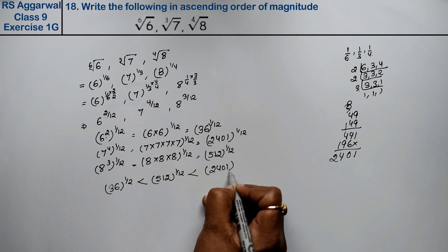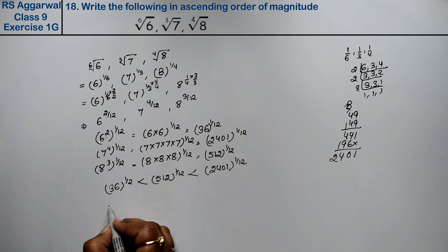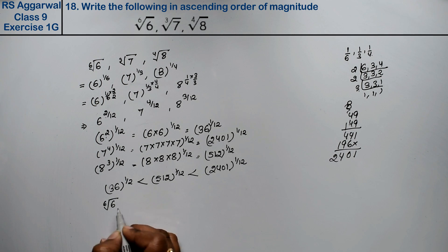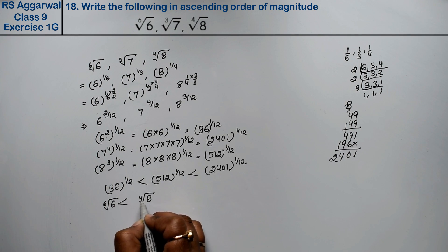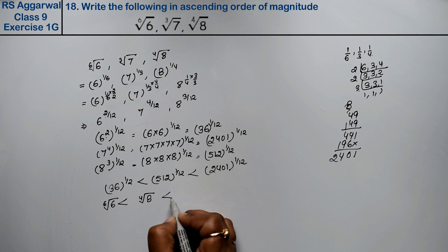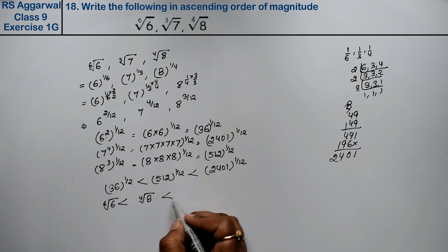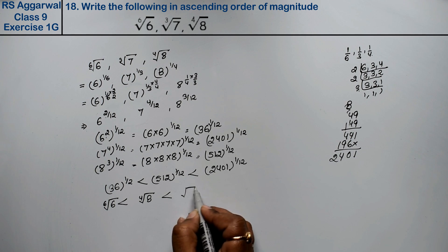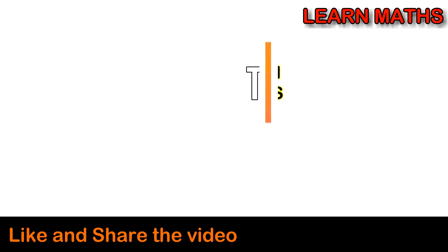Next is 512^(1/12), and the largest is 2401^(1/12). Now writing back the original values: 36^(1/12) = ⁶√6, 512^(1/12) = ⁴√8, and 2401^(1/12) = ∛7. So the ascending order is: ⁶√6 < ⁴√8 < ∛7.